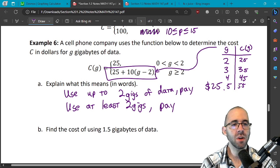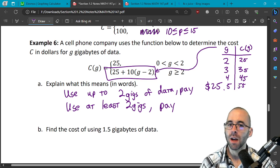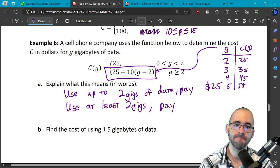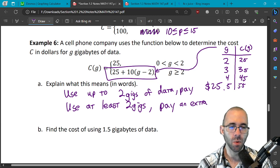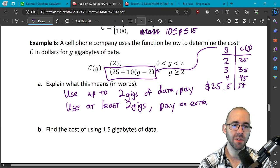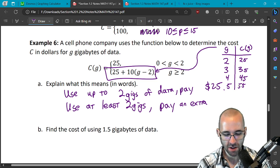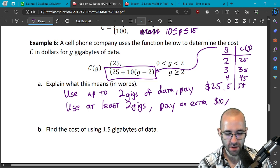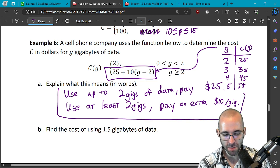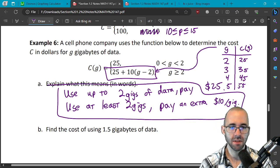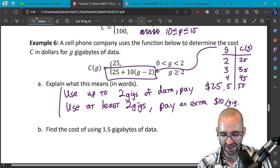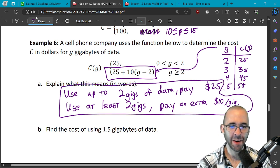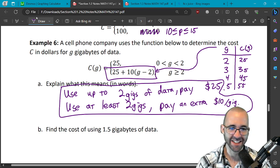So what's happening is that if we use up to 2 gigs we pay 25 bucks, but any amount that we go over, we're going to have to pay $10 per gig. We go over by 1 we have 10 extra, go over by 2 we have 20 extra. $10 per gig. And that's what this piecewise function means in words.